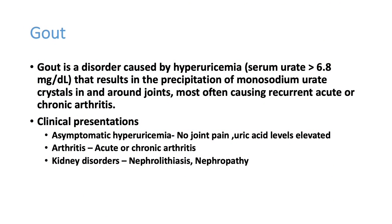Gout is a disorder caused by high uric acid — more than 6.8 or 7 mg per deciliter. It results in precipitation of monosodium urate crystals in the joints and causes recurrent acute or chronic arthritis.